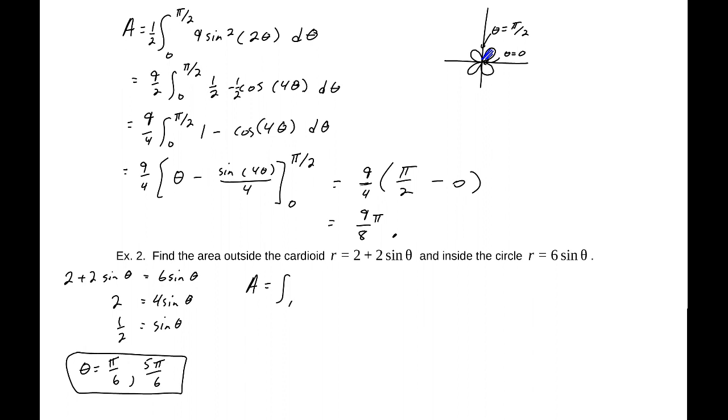That would be 4sin(θ) = 2, or sin(θ) = 1/2. There are two places where that is true: sin(π/6) and 5π/6. So those are our endpoints for our integral. So from π/6 to 5π/6, we want to find the area. Let's do these two separately. One half times the integral from π/6 to 5π/6 of our outer function, which is 6sin(θ) squared, or 36sin²(θ) dθ.